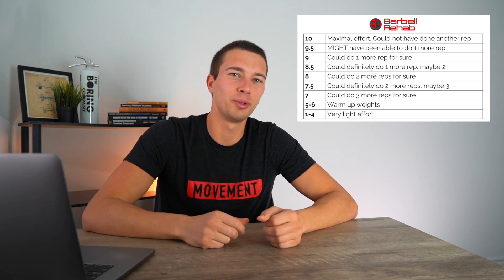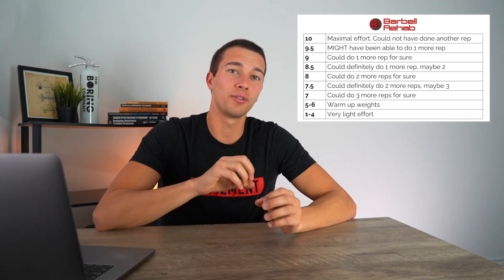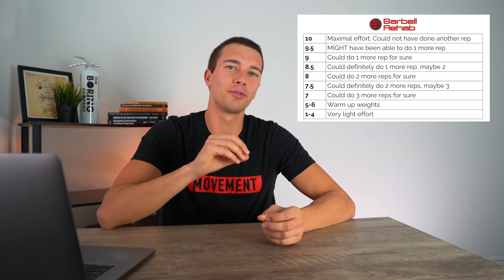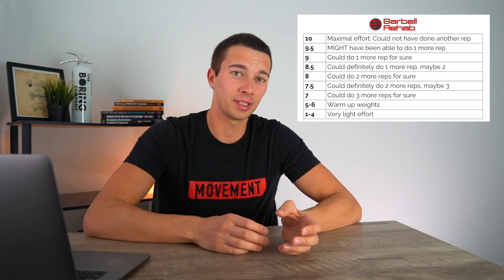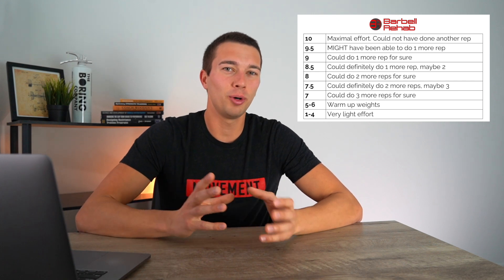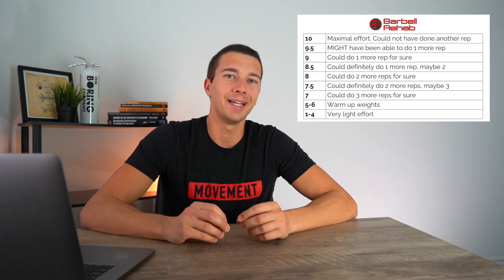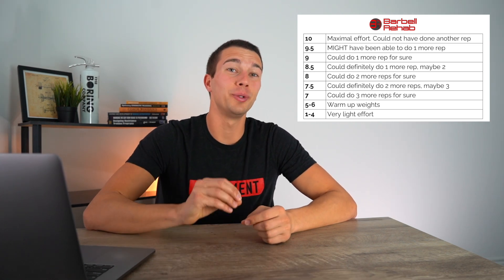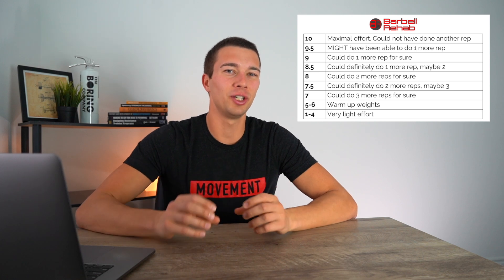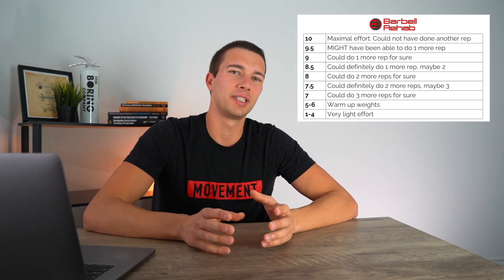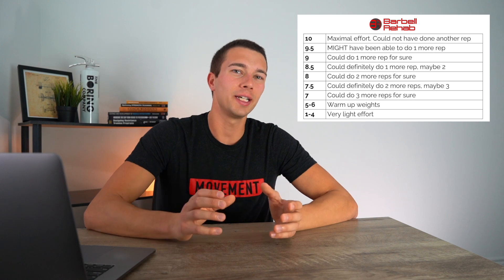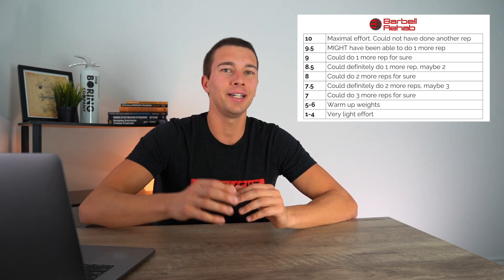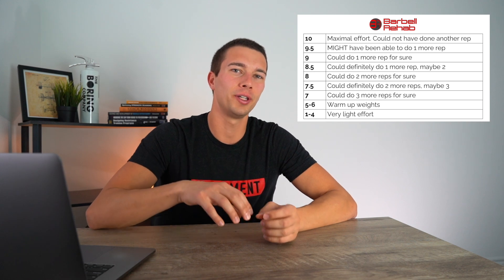Here's a chart from Barbell Rehab — shout out to Michael Mash and the stuff that he's doing, link in the description below. This chart explains what, for example, a seven RPE looks like in terms of number of reps left in the tank. If you use your ten rep max load and do seven reps, you could have done three more — that puts you at about a seven out of ten RPE. If you're using your ten rep max load but doing nine reps, that's a nine RPE because you could have done one more. Warm-up sets are typically at that five to six RPE range as you're gradually building up intensity, and your working sets are usually somewhere between six and nine, varying week to week based on the goal and phase of training.